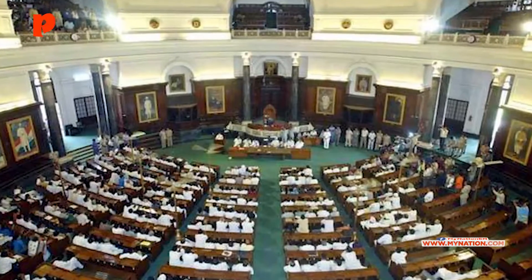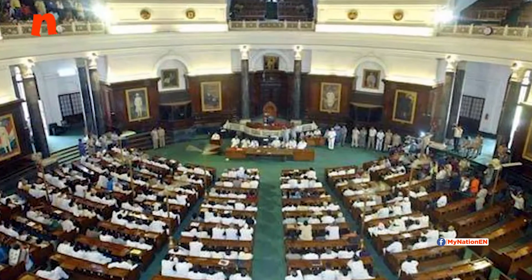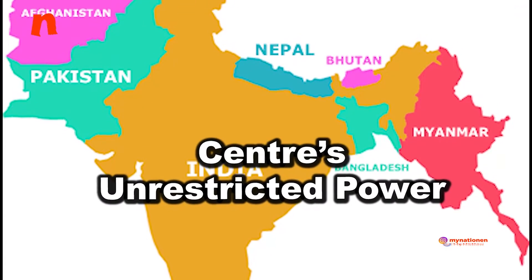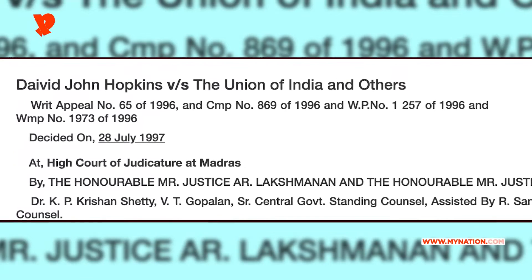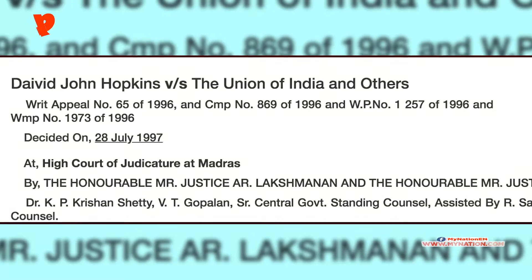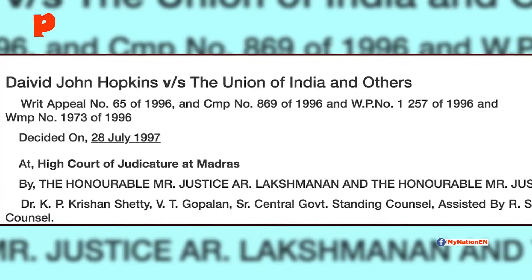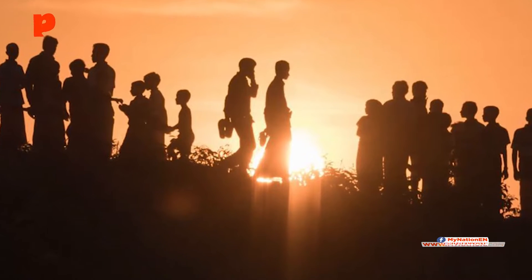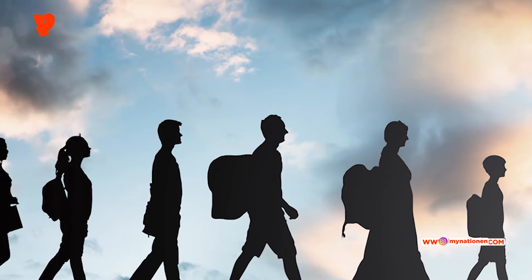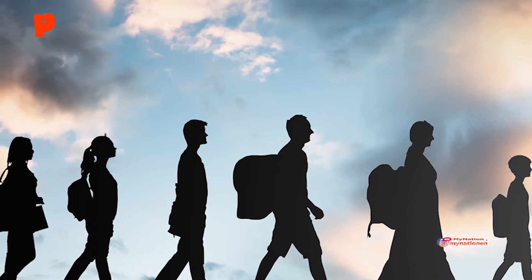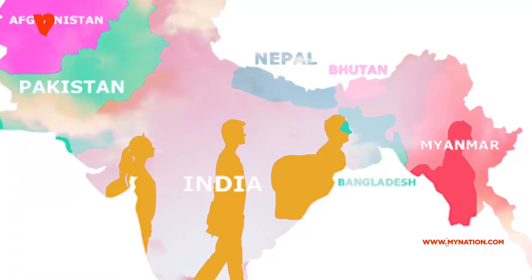Let's take a look at some of the past precedents which would suggest that the Act would pass the legal test. The Supreme Court in the David John Hopkins vs. the Union of India case of 1997 had said that the government of India has an unrestricted power to refuse citizenship without assigning any reason whatsoever. Hopkins, being a foreign national, cannot claim equal rights under Article 14 of the Constitution of India with that of Indian nationals. We are of the further view that Section 14 of the Act is not ultra vires Article 14 of the Constitution of India because the foreign nationals do not have any fundamental rights guaranteed for the grant of Indian citizenship, the Supreme Court had said.